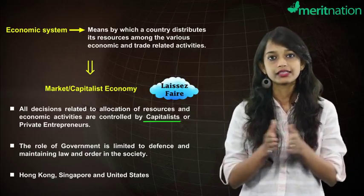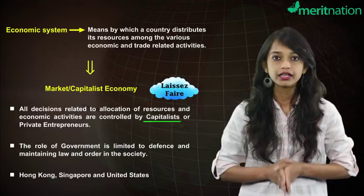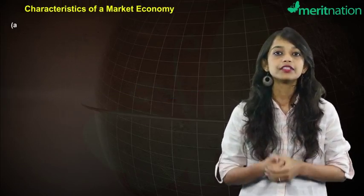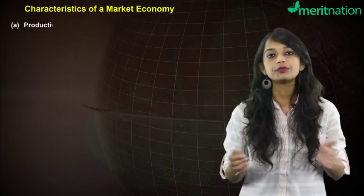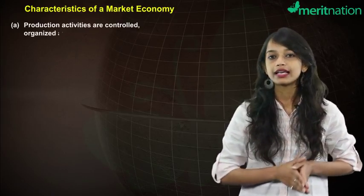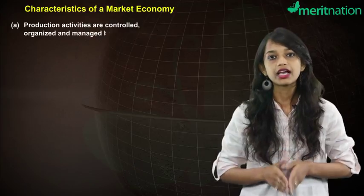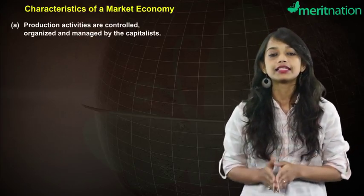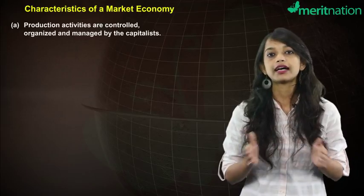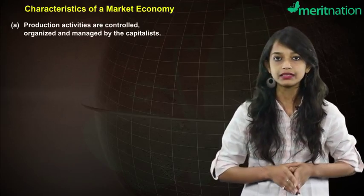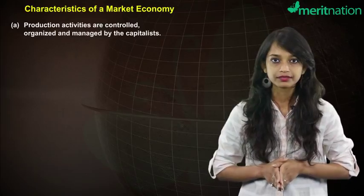Based on our discussion so far, let me tell you some interesting features of a market economy system. The first point is that the production process in a market economy system is organized, managed and controlled by the capitalists. That is, it is the capitalists who hire the factors of production such as land, labor and capital to undertake the production process.